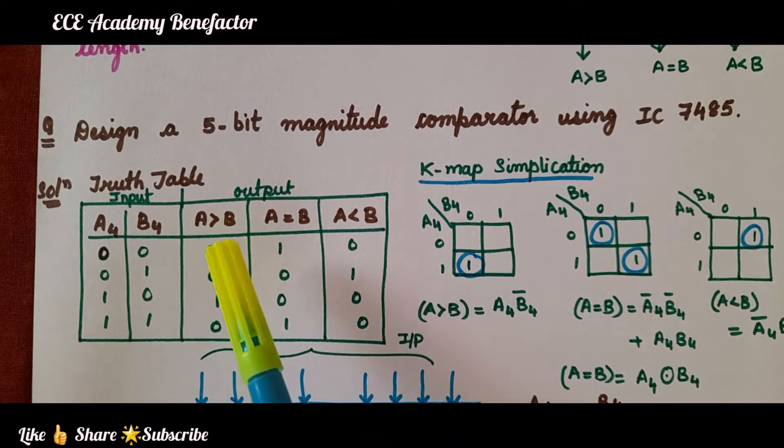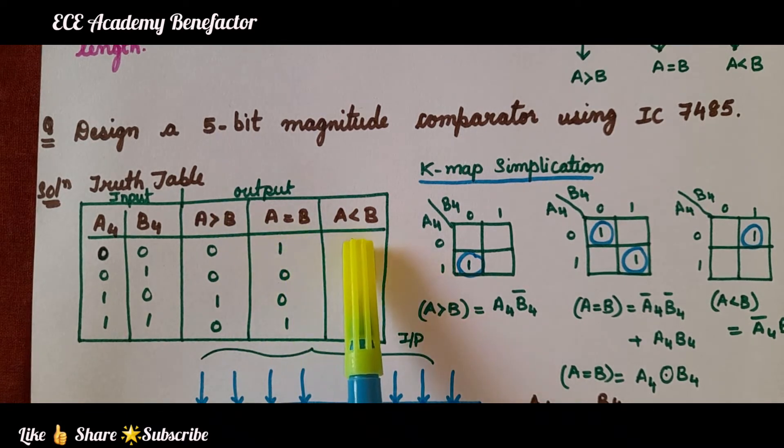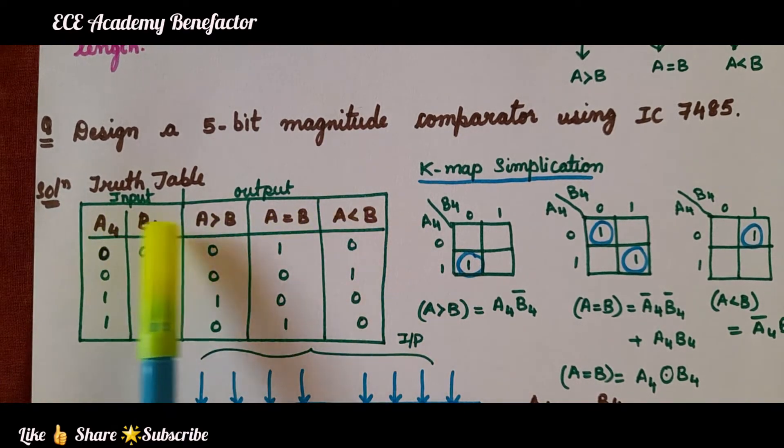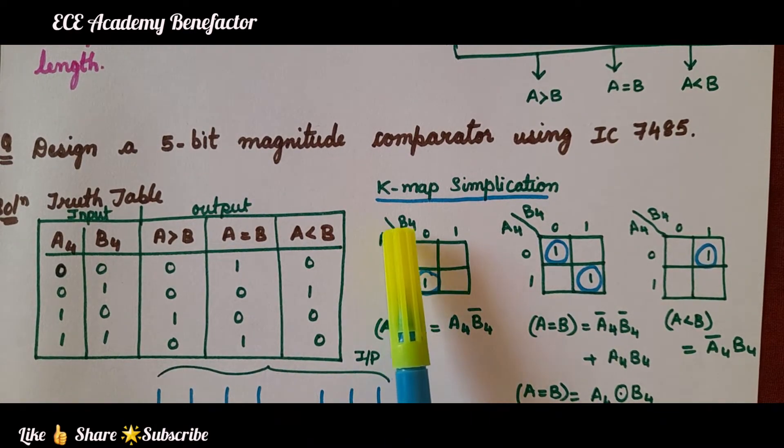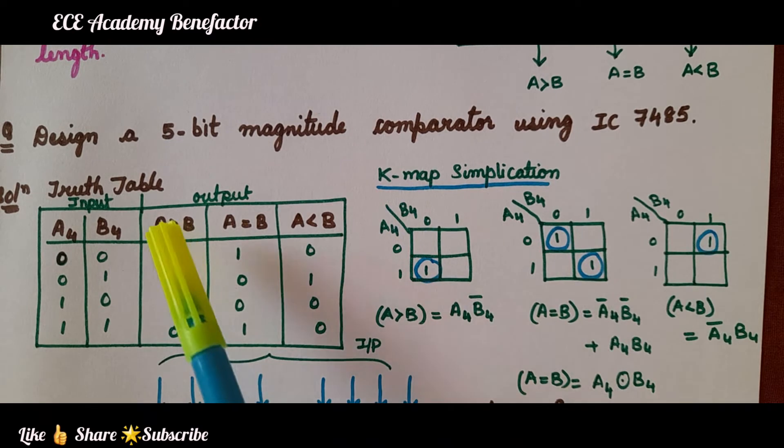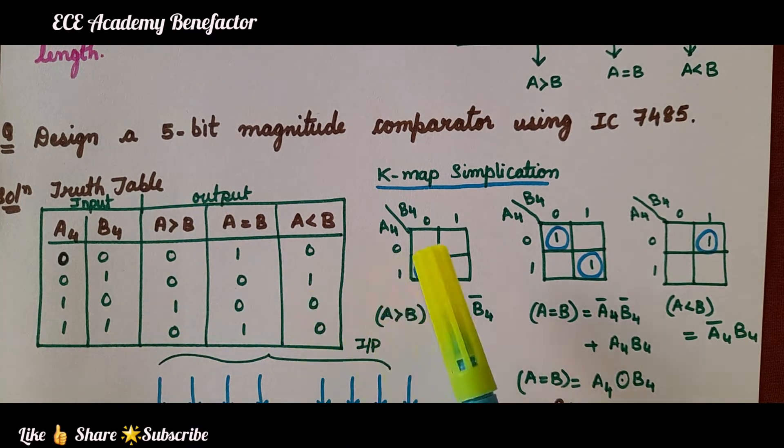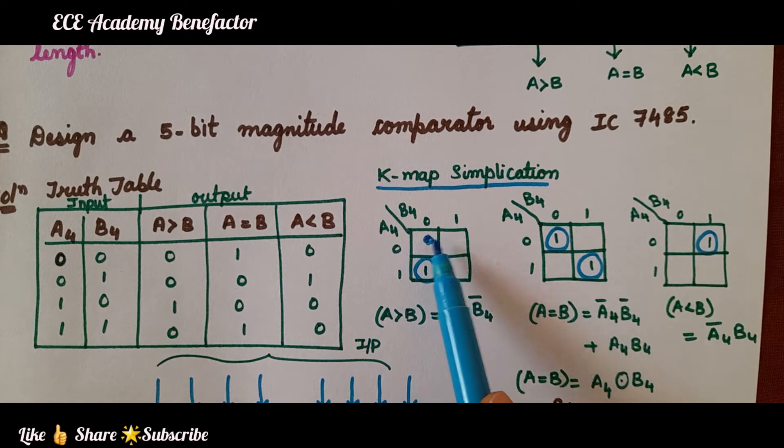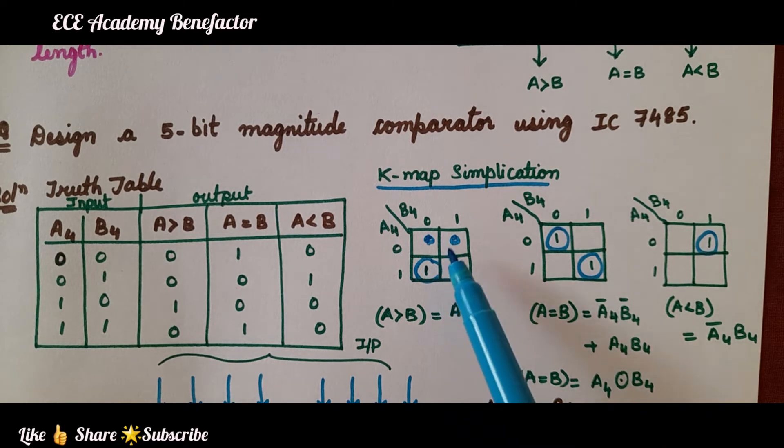Now we need to draw three K-maps for A greater than B, A equal to B, and A less than B. How many bits? Two bits. Three K-maps, two bits, which I have drawn here. The input bits are A4, B4, outer structure 0, 1, 0, 1. Now looking at this column, A greater than B, fill the ones. So there is no pairing of 1. Only single 1 is there which we have grouped it.